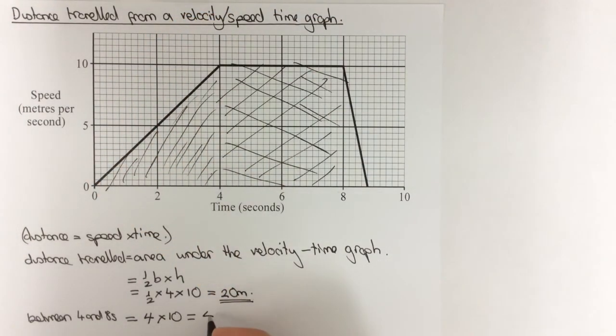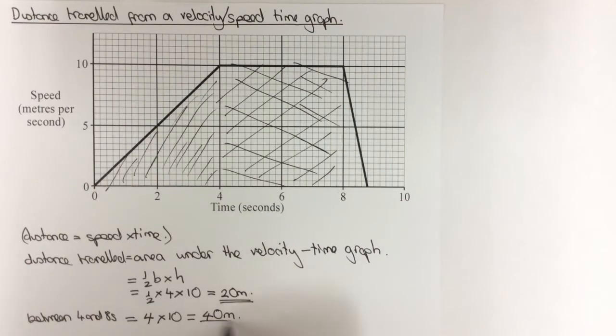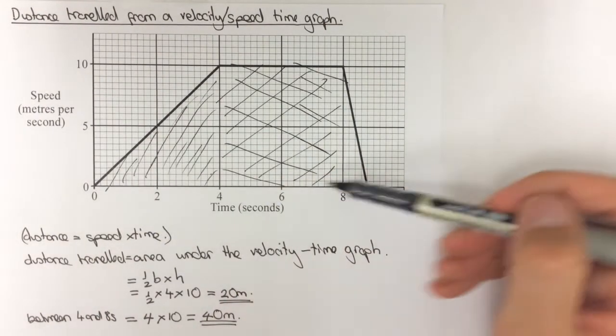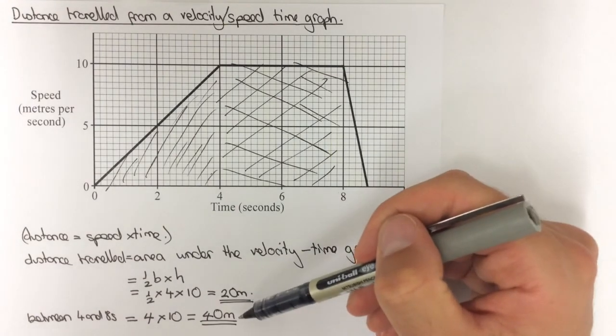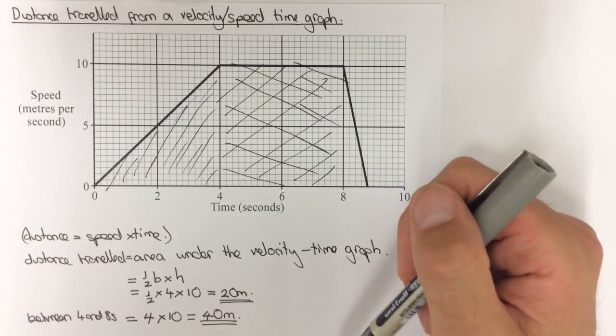Four times ten gives us forty metres, and so the total distance travelled in those first eight seconds would be twenty plus forty which gives you sixty metres.